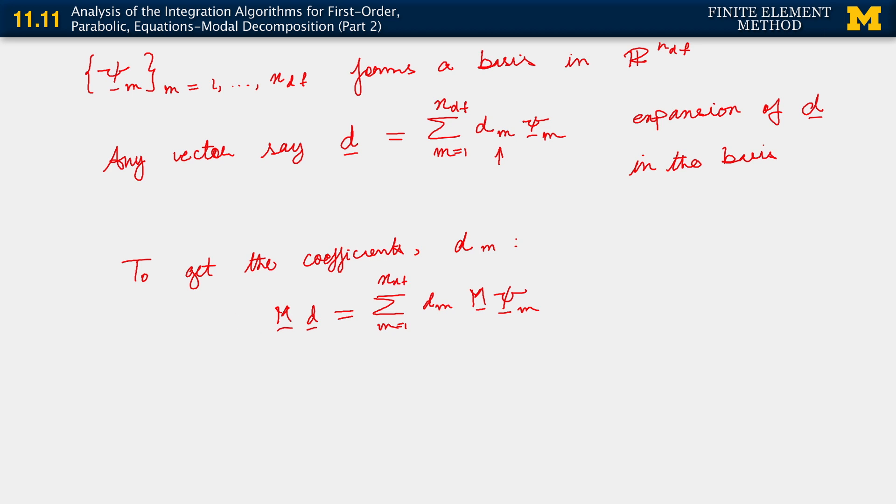Now once we have this, we can now dot this vector equation on the left by psi k. And we can do the same out here. Using the linearity of the dot product, what we get is the following.